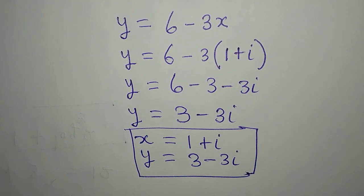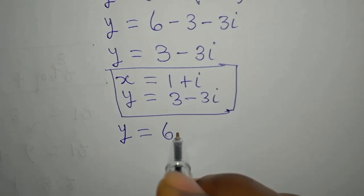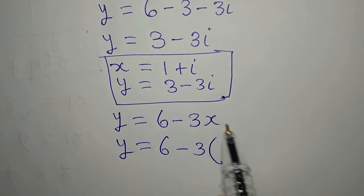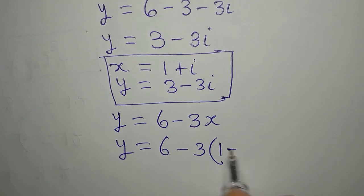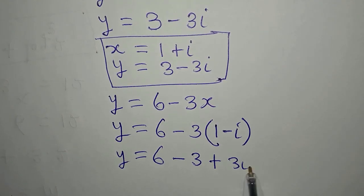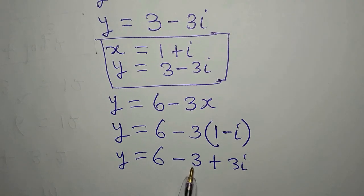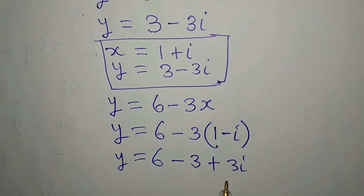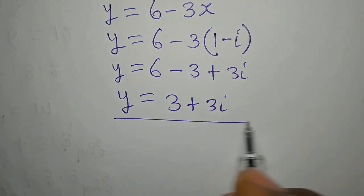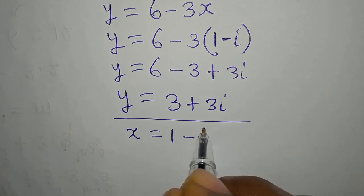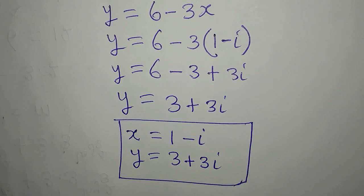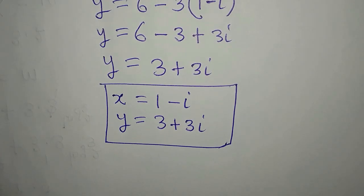For the second value of x, y is still 6 minus 3x. So y equals 6 minus 3 times the bracket 1 minus i. This gives y equals 6 minus 3 plus 3i, because negative 3 times negative i gives positive 3i. So y equals 3 plus 3i. This means when x equals 1 minus i, y equals 3 plus 3i. This is the end of the solution.